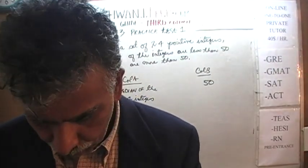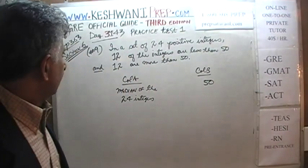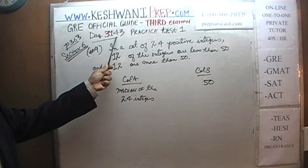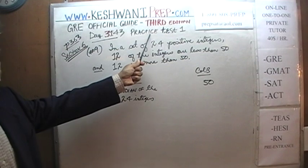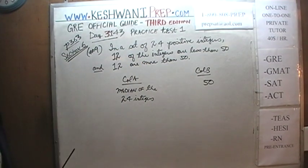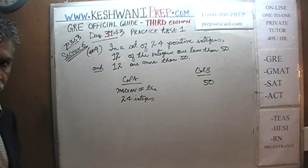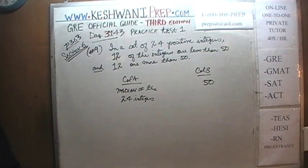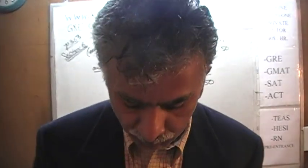If you do not own this book already, purchase it immediately — you are going to need it. Today is our lesson number 143. Day 3143 signifies that we are in the third edition, day 143. We are working on the practice test at the end of the book on page 363. Please turn to page 363, section number 6. On that page you will see question number 9, the very last quantitative comparison problem. That's where we pick up from, because yesterday we stopped at question number 8.